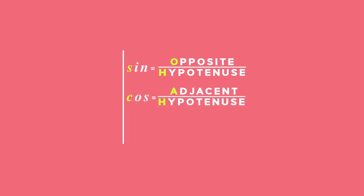Remembering your SOHCAHTOA rule, which is sine equals opposite over hypotenuse, cosine equals adjacent over hypotenuse, and tangent equals opposite over adjacent.